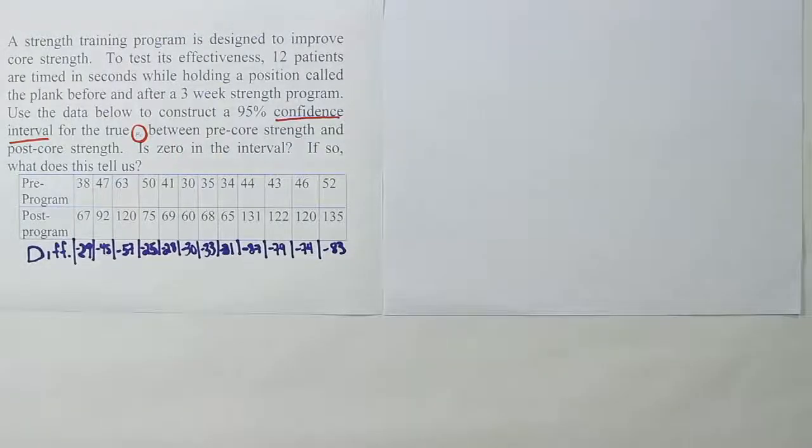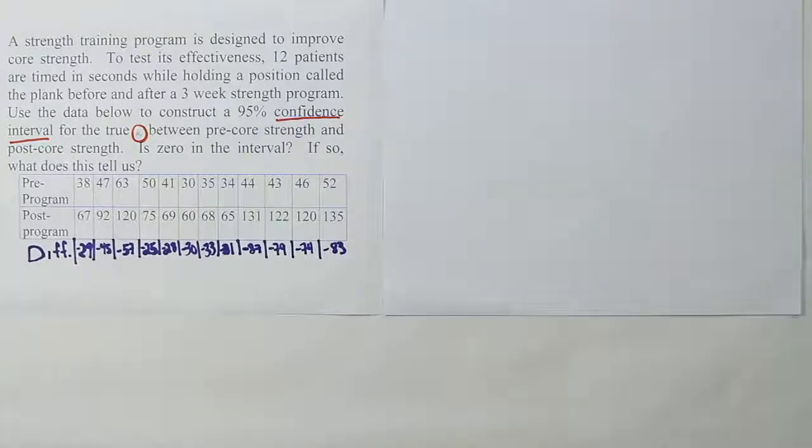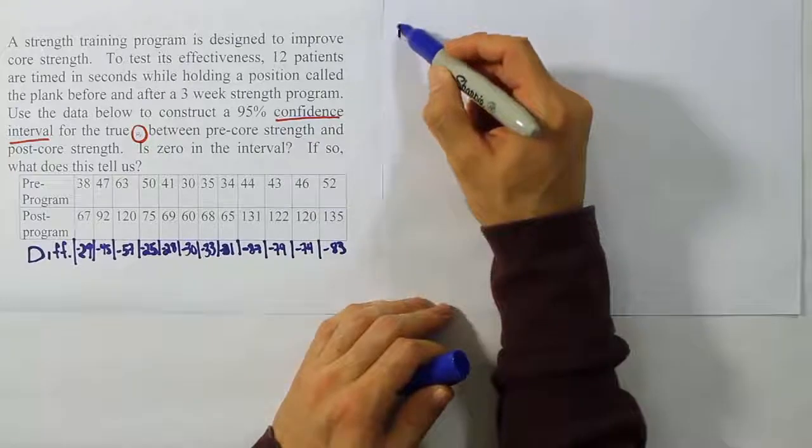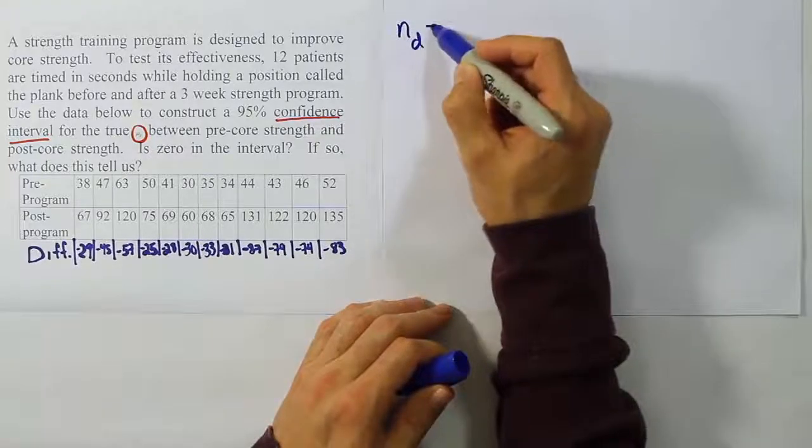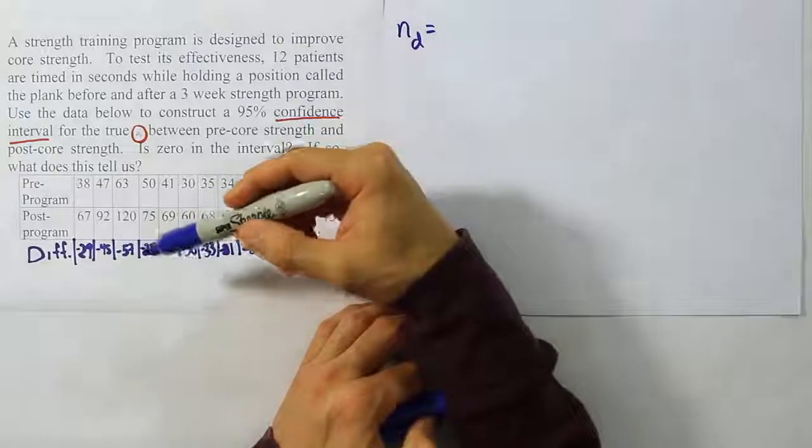So at this point, I've calculated the row of differences here at the bottom to help us. I've already calculated the mean, the standard deviation, and so on for that data so that we can use it in our confidence interval. So let's start with the first step of a confidence interval, which is to list all that data. You're going to have an N sub D, which is the number of differences present. If you count, you're going to see that there's 12.